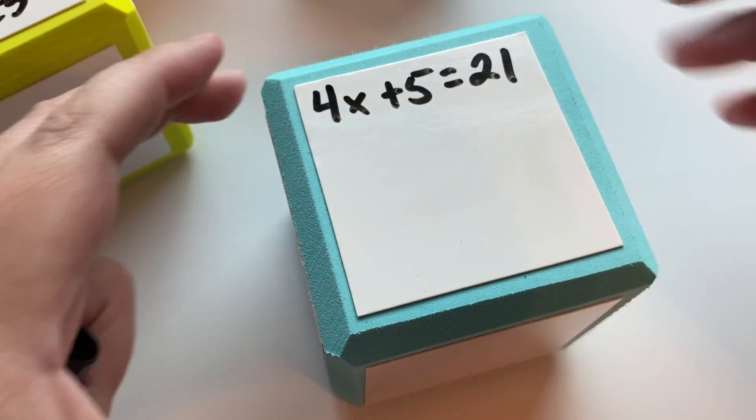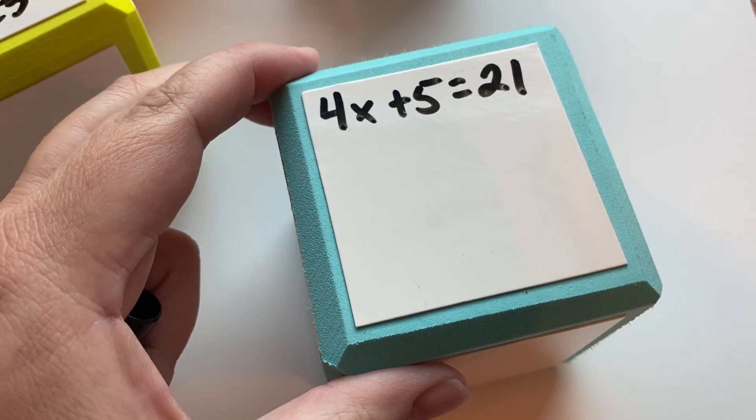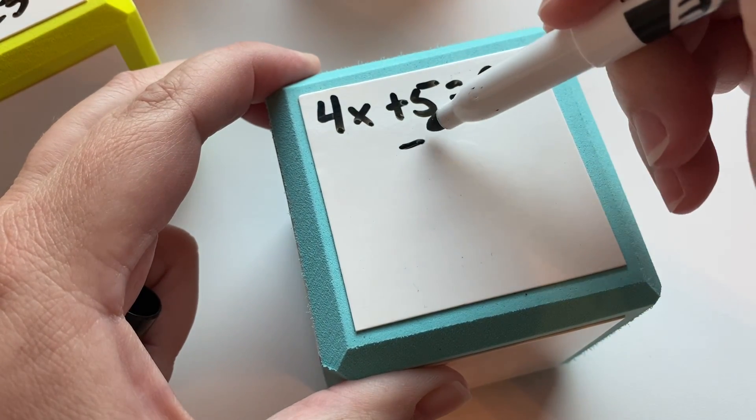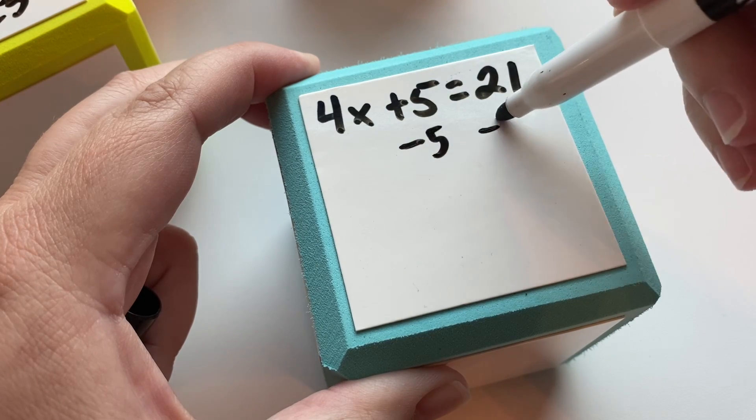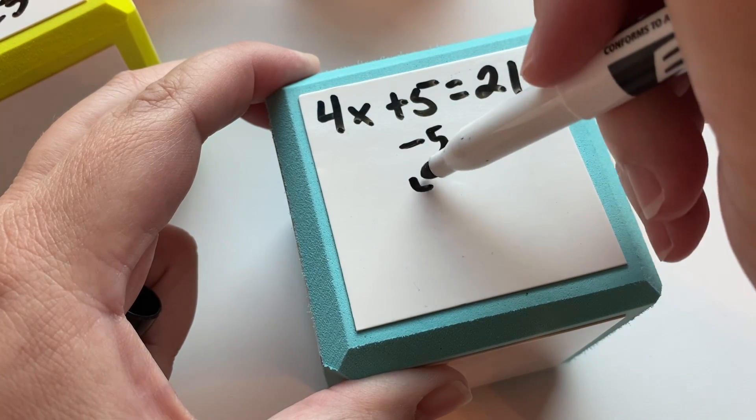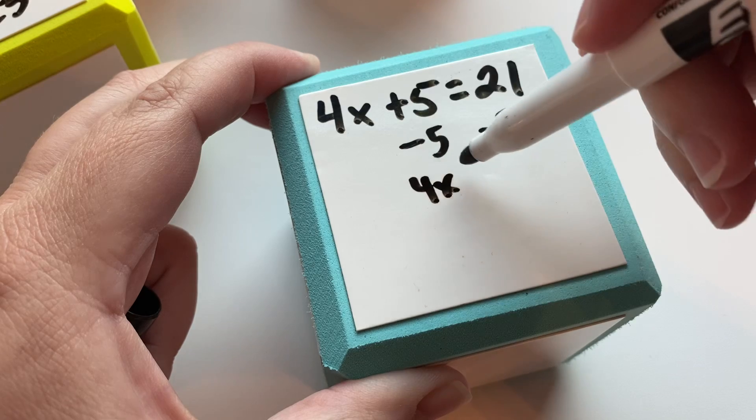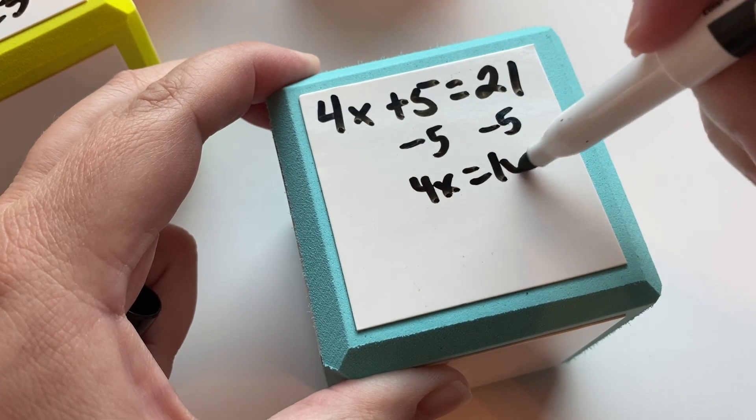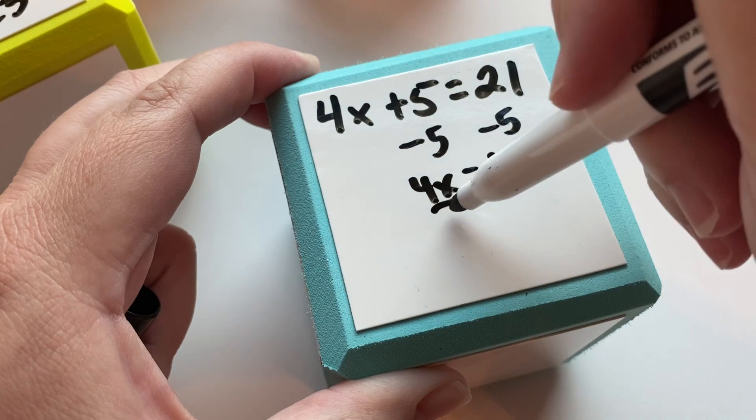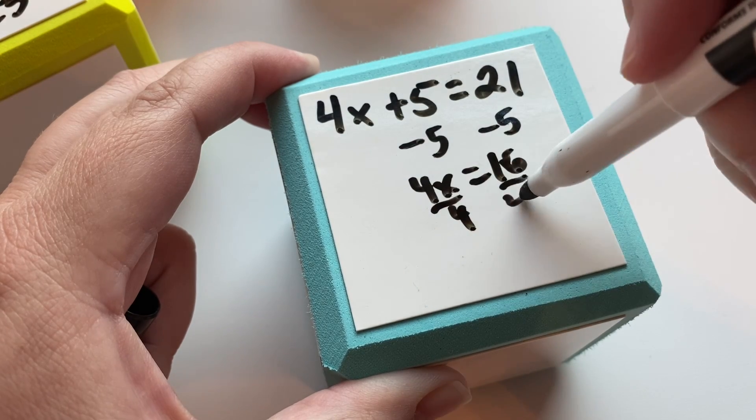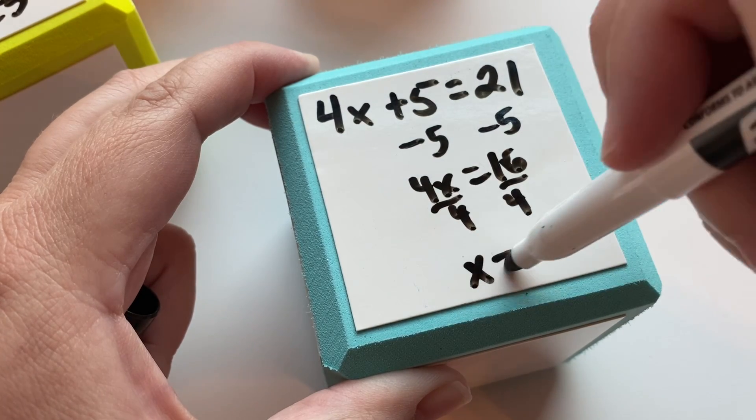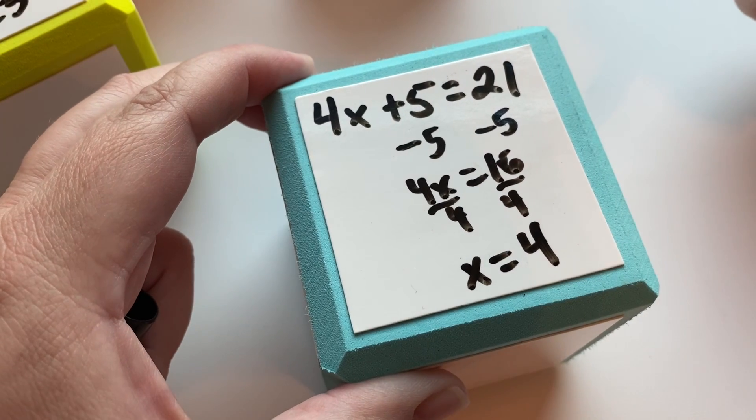I bet you can guess we're going to do the subtraction first. So we get 4x here because 5 minus 5 equals 0, and then 21 minus 5 is 16. You can probably see where this is going. We're going to divide both sides by 4, and then x is equal to 4.